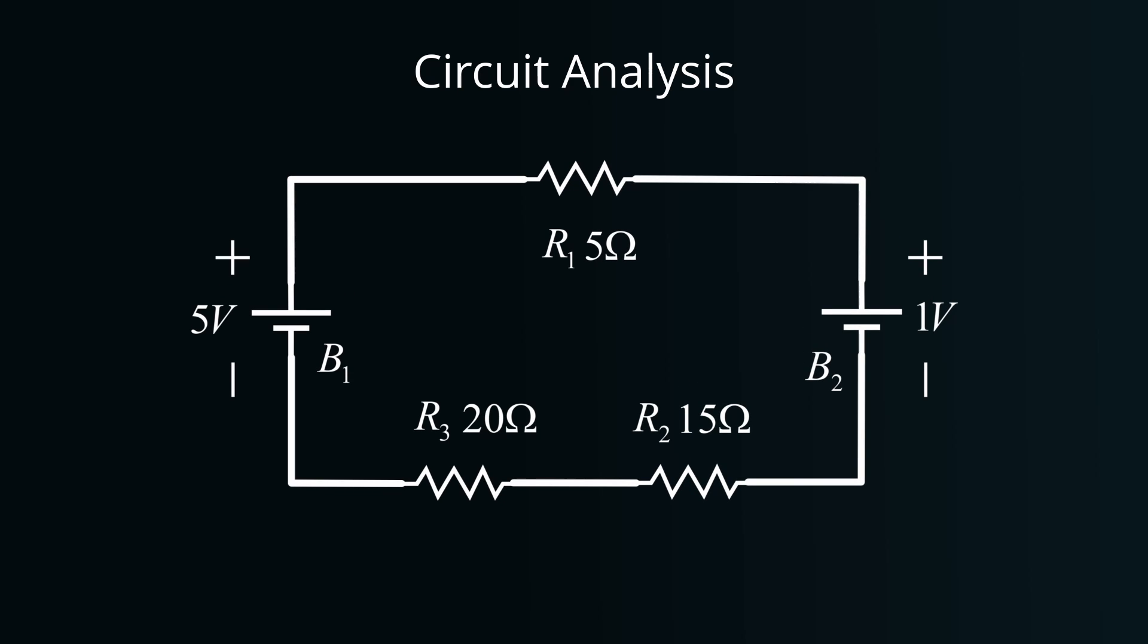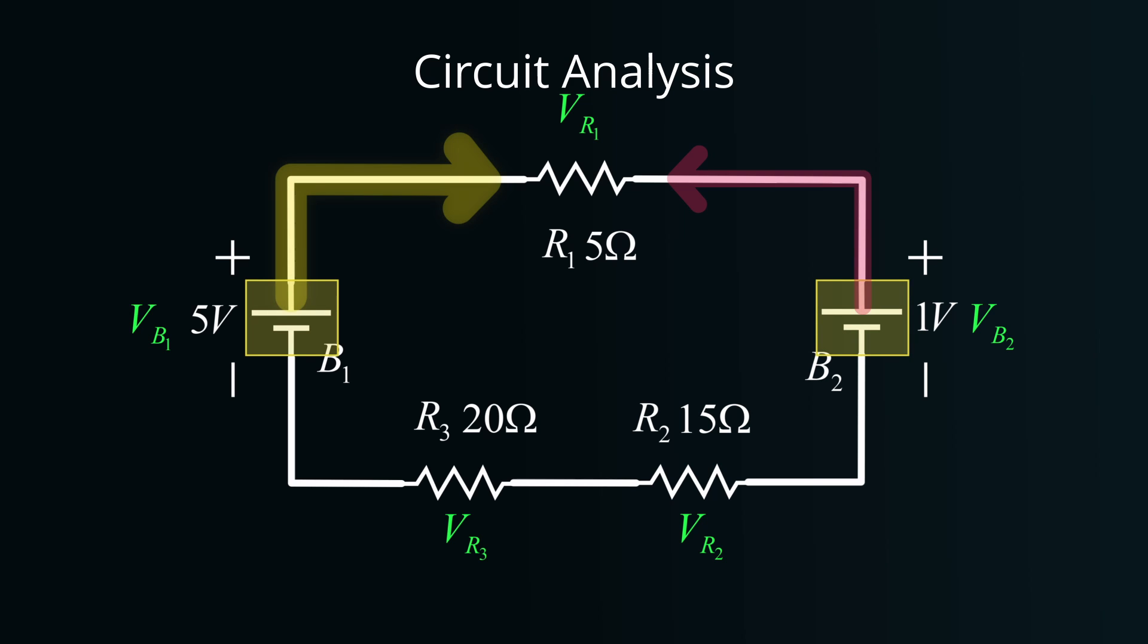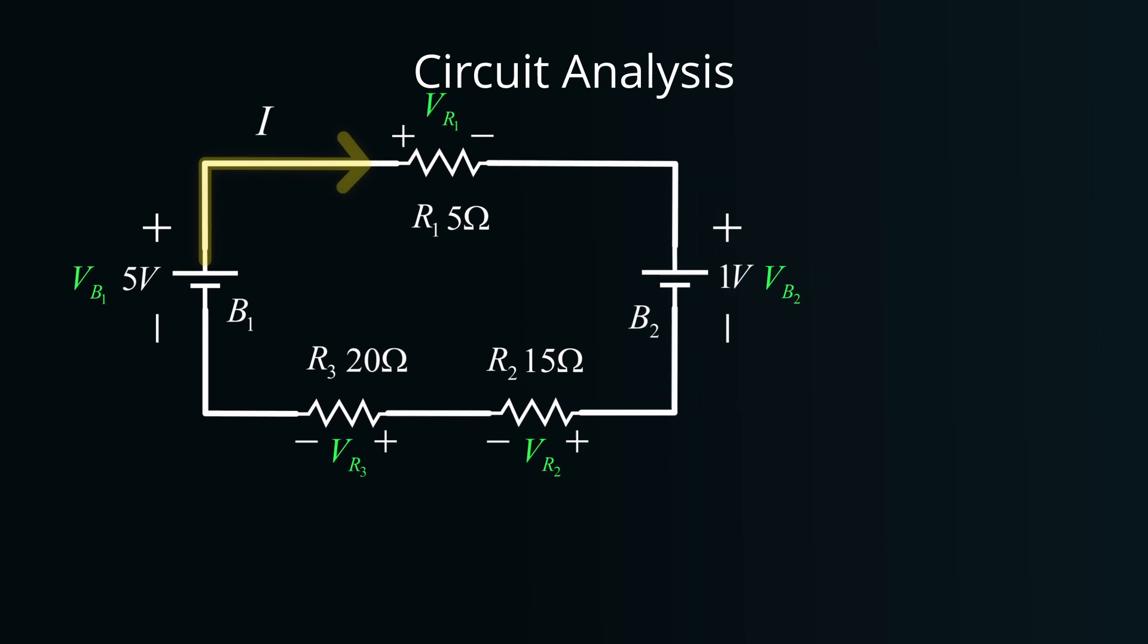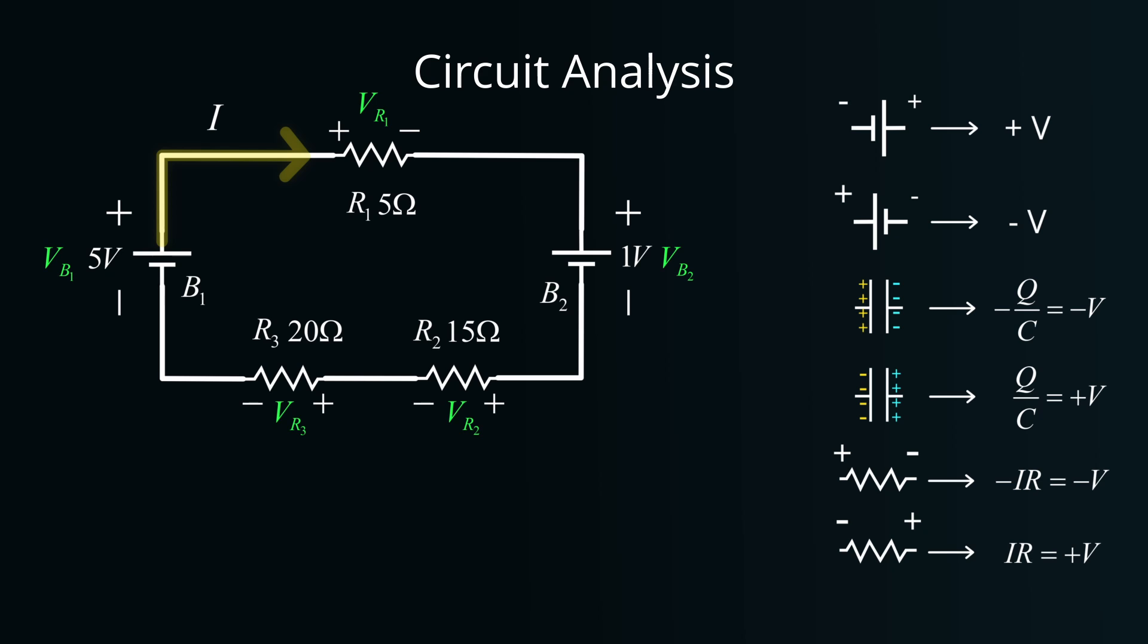First things first, let's label the voltages across each component. Next, let's discern the direction of the current. Observing the two batteries, it's evident they counteract each other. Given the 5 volt battery has more strength compared to the 1 volt counterpart, we can infer the current will predominantly flow in a clockwise direction. Now, to apply KVL, let's traverse this loop clockwise, beginning from the bottom left of our circuit diagram.